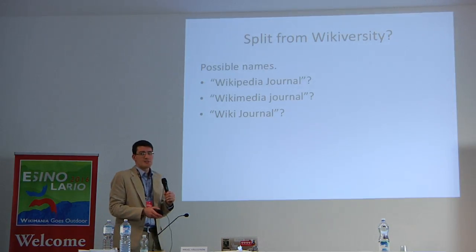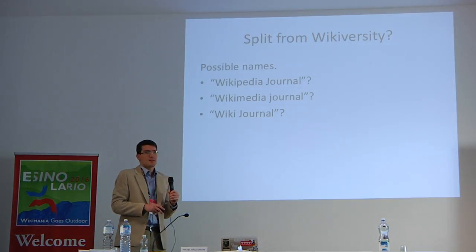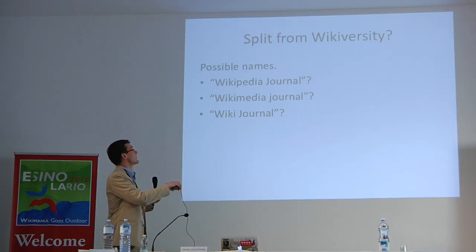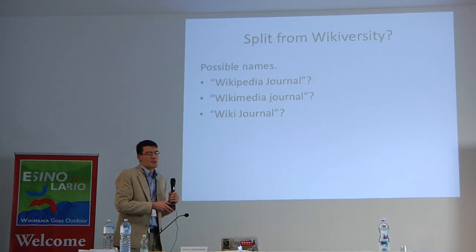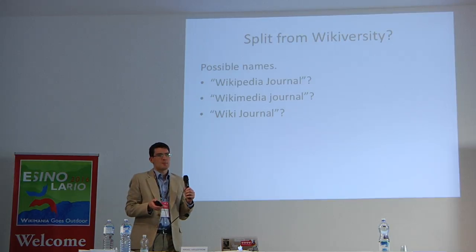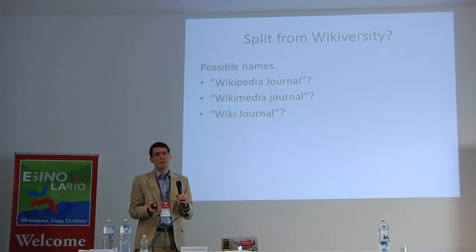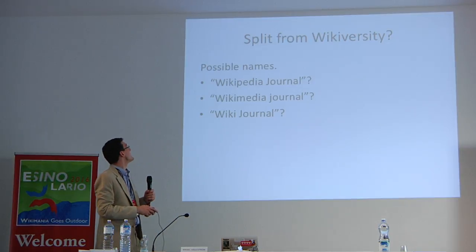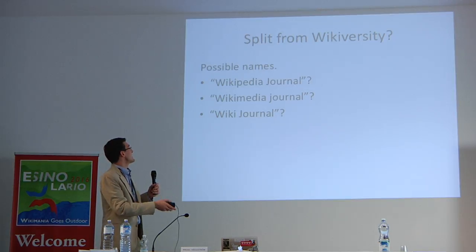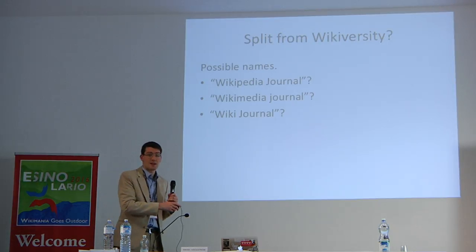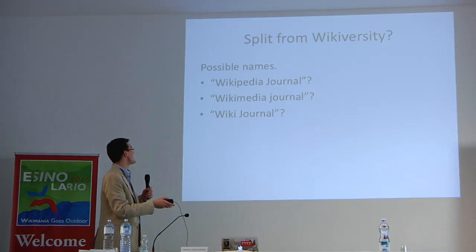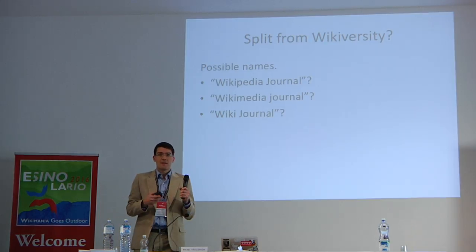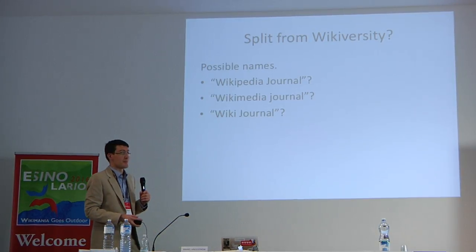When looking at the future, it is possible that this journal will be split from Wikiversity, because Wikiversity is more targeted at education while this journal seeks to attract new knowledge. Possible names that have been suggested for this project as a standalone project are the Wikipedia Journal, the Wikimedia Journal, or simply the Wiki Journal. If you have any further suggestions, I'm happy to hear about them.